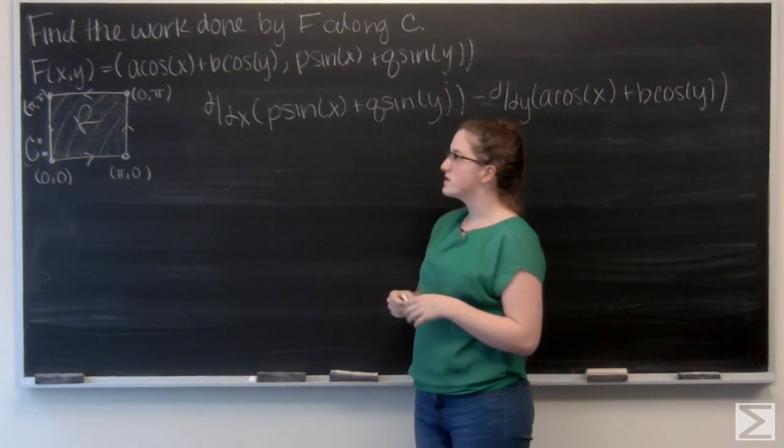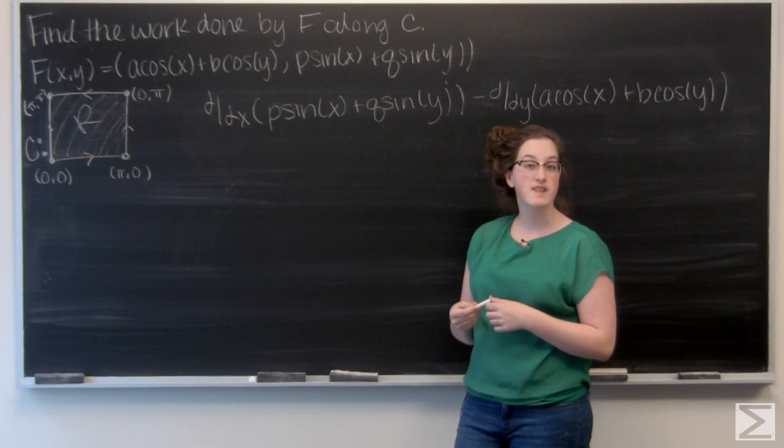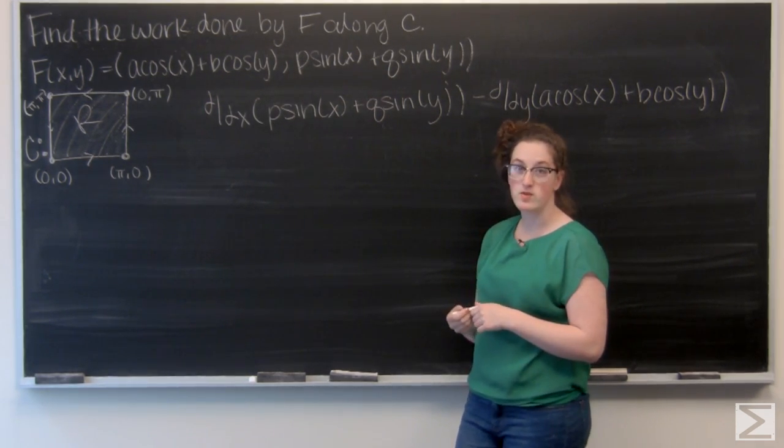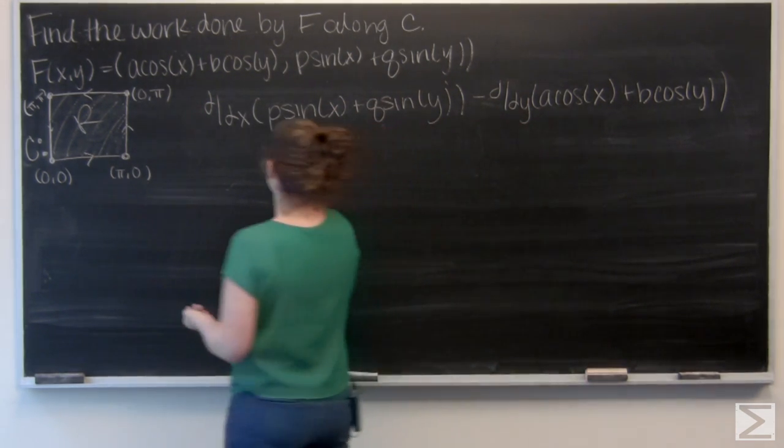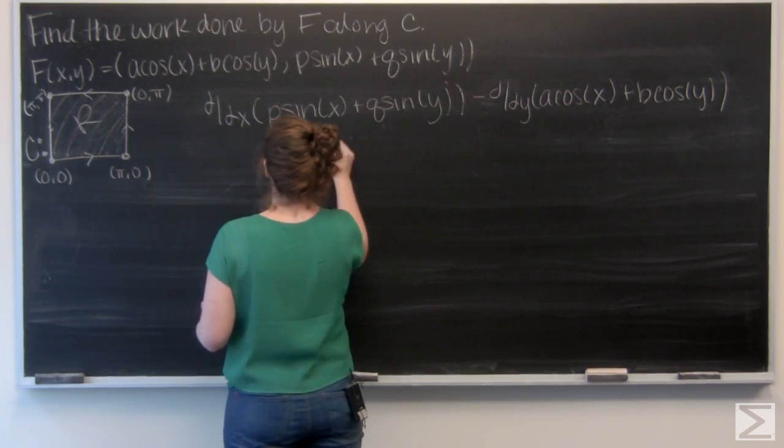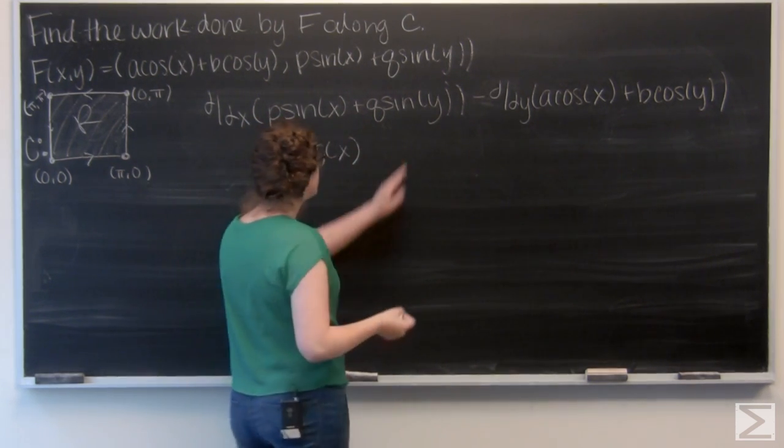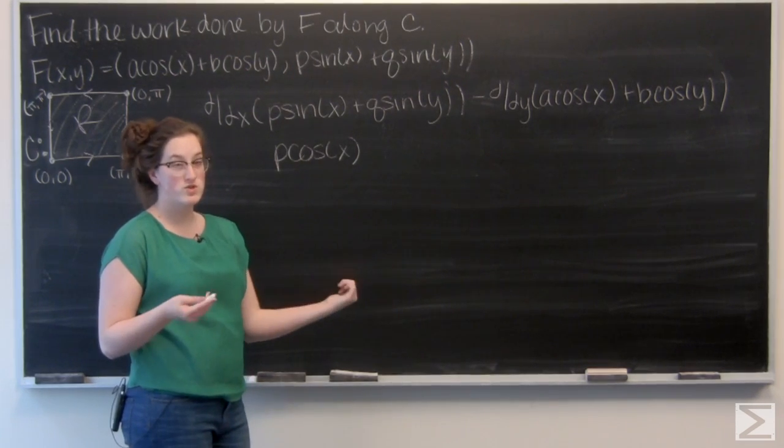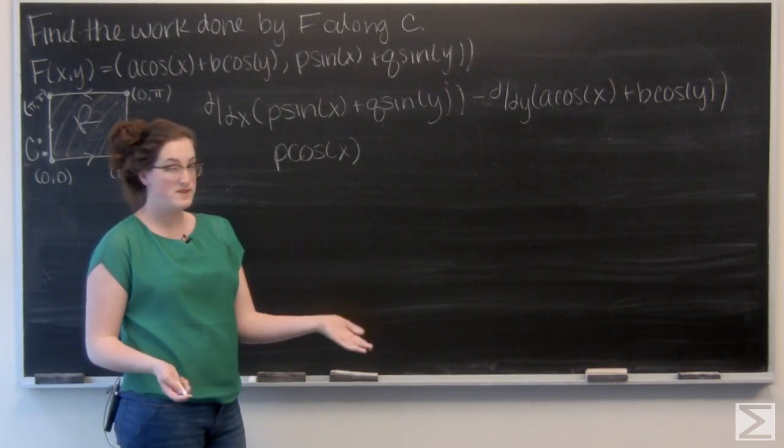Just taking a look at the first term, I want to differentiate P sin(x) times x with respect to x, so I'm going to get P cos(x). And then Q sin(y) is going to be treated like a constant, so the partial derivative of that with respect to x is going to be 0.